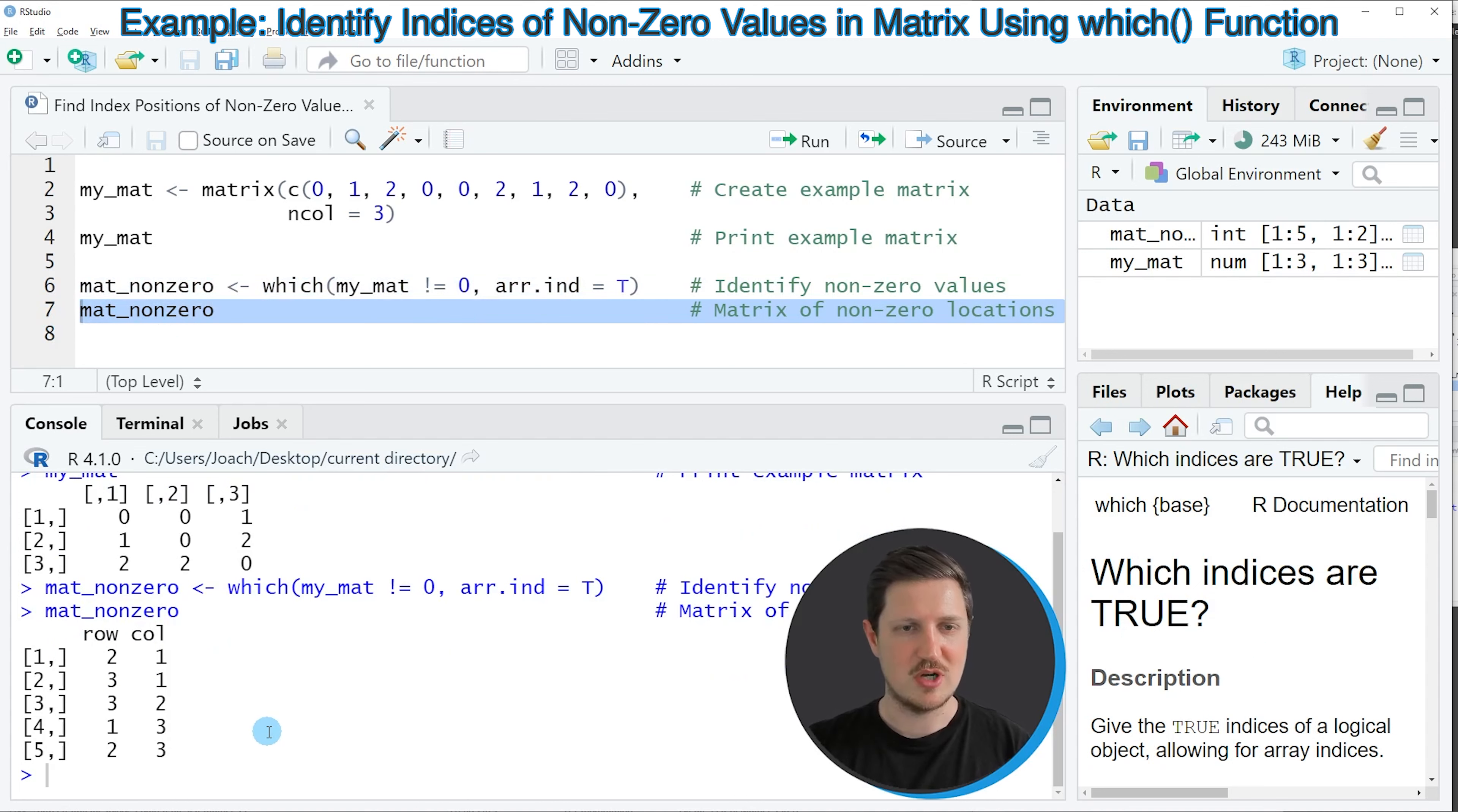And then you can see that we have created a new matrix which contains the row and column index positions of all non-zero values. So for instance, the index position in row 2, column 1 is non-zero. In this case, this is the value 1. And for that reason, this index position is shown in our output matrix.